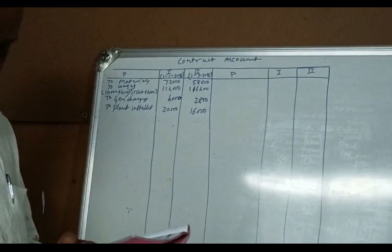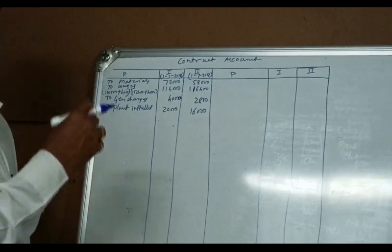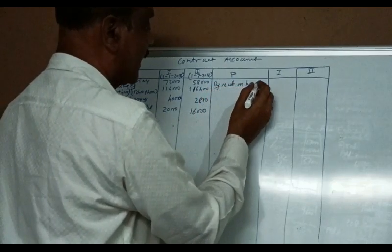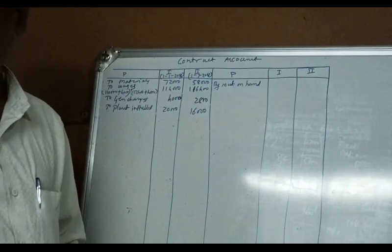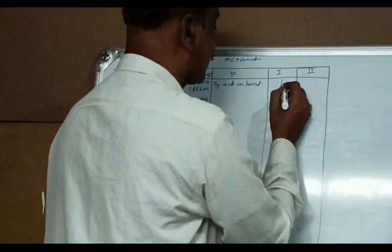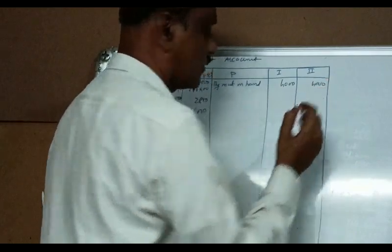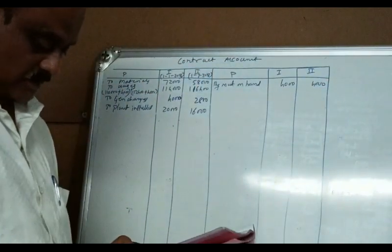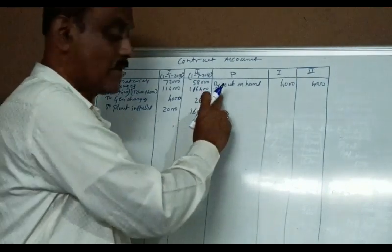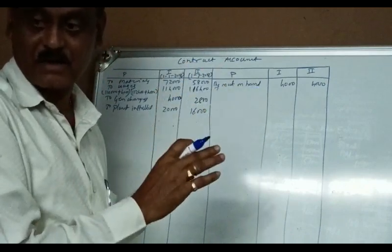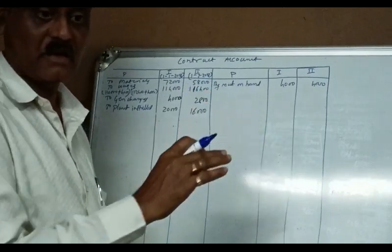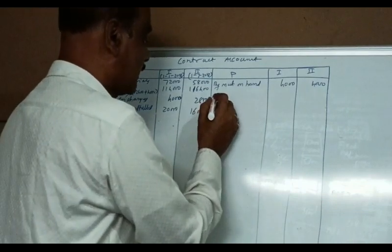Material on hand: closing stock of material on hand at site — first contract four thousand, second contract four thousand. Then material lost and plant return entries. Any plant return or plant sold is deducted. We will follow the standard formula for plant at site.